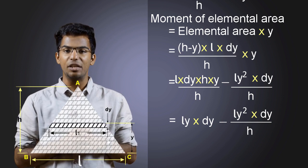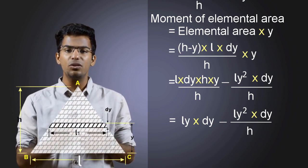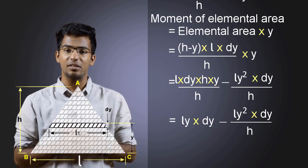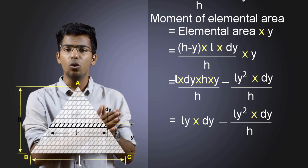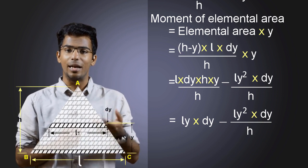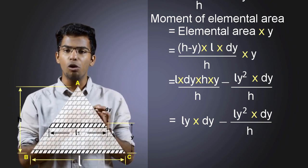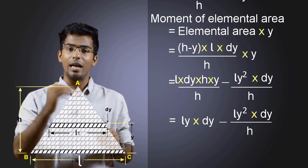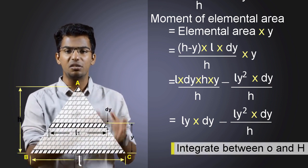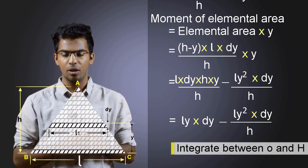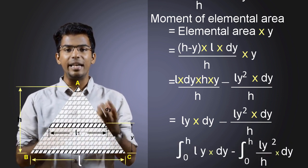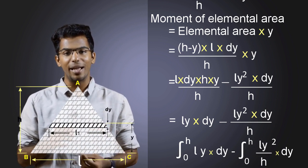When we talk about integration, we should always consider the limits of integration. The distance of these elemental areas from the reference axis will be changing, so we should consider that as the limit. The distance of the rectangle at the bottom from the reference axis is almost 0, and the distance of the rectangle at the top is H from the axis. So we should integrate between 0 and H. Considering all that, we have the integral of L times Y times DY minus the integral of L times Y squared divided by H times DY.